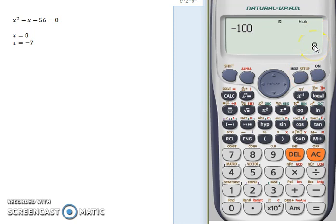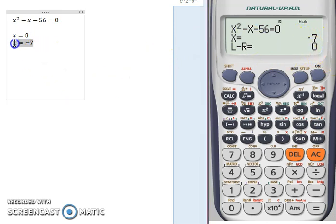The calculator is using interpolation. If we press negative 100, the interpolation starts from negative 100 and whatever is the nearest solution to negative 100 will be produced by this calculation. We press equal and negative 7 will come out. So negative 7 is produced when our initial value is negative 100.